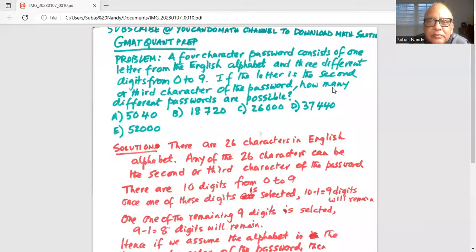So let's get started on this problem. A four character password consists of one letter from the English alphabet and three different digits from zero to nine. If the letter is the second or third character of the password, how many different passwords are possible?